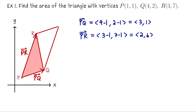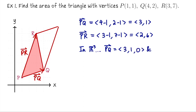The cross product only makes sense in three-dimensional space, but we can think of our 2D vectors as embedded in R3 by giving each a third coordinate of zero. So in R3, we treat PQ as the vector (3,1,0) and PR as the vector (2,6,0). Now it makes sense to compute their cross product.